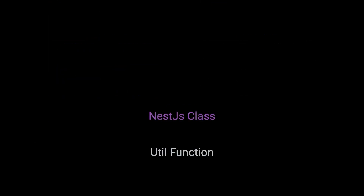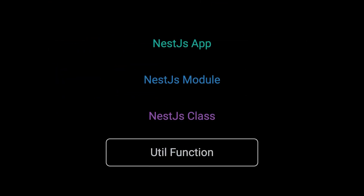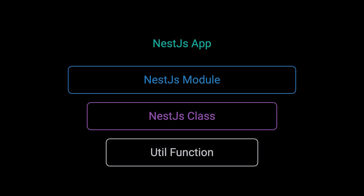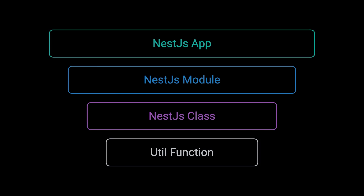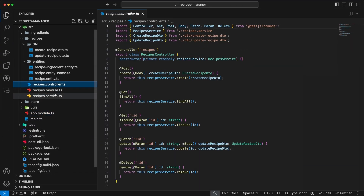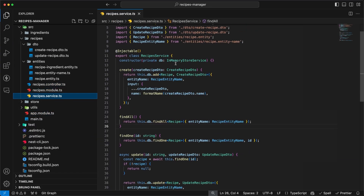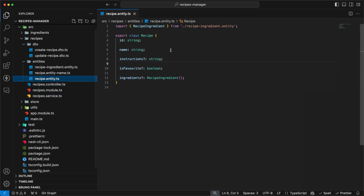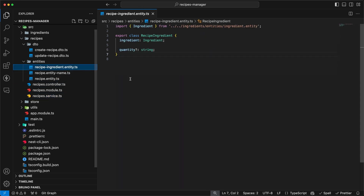At each one of these levels — whether it's a utility function, a NestJS class, a module, or the whole application — you need to apply different techniques and tools for testing. I'll be using a very basic NestJS app that has a recipes module to demonstrate all the testing steps.